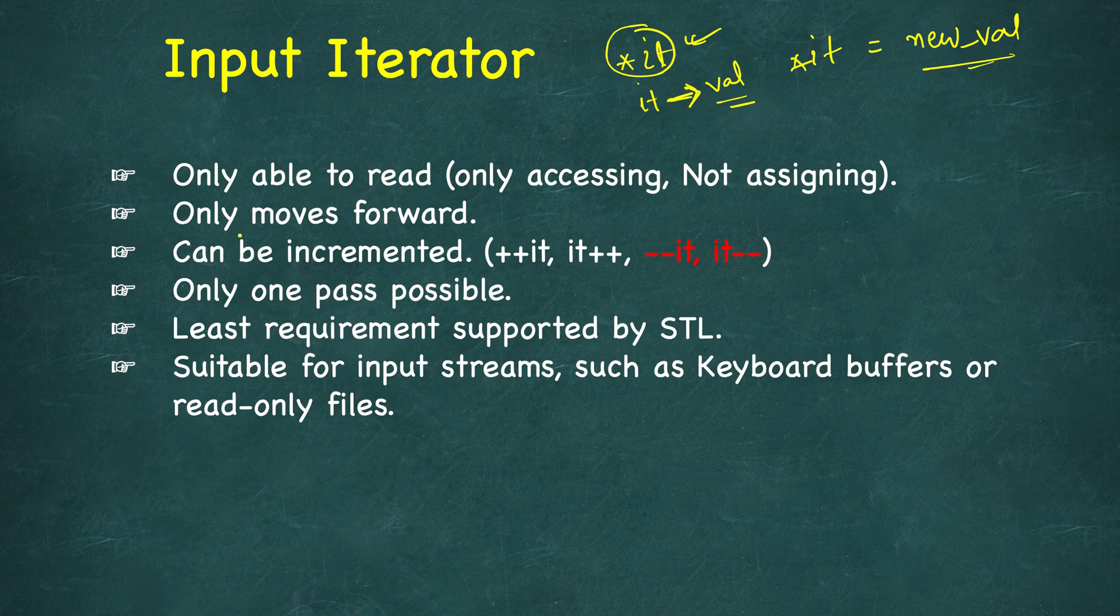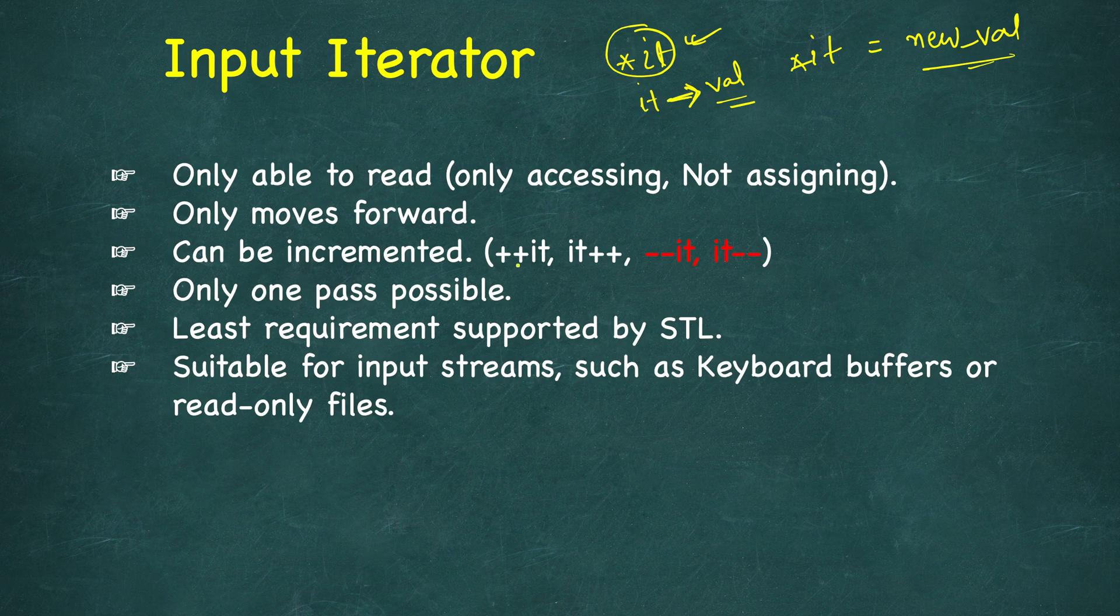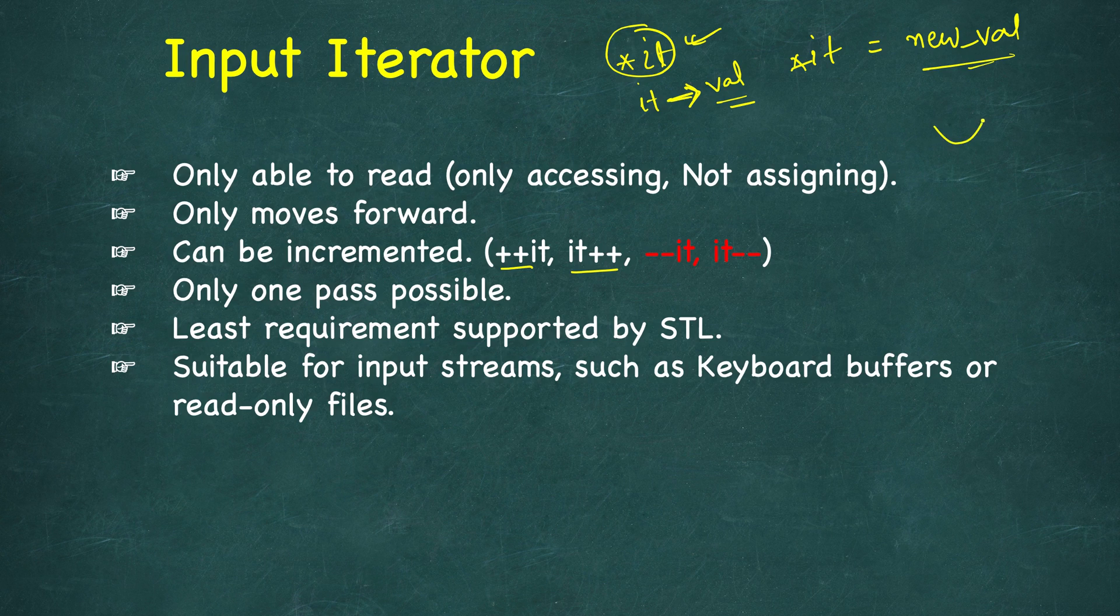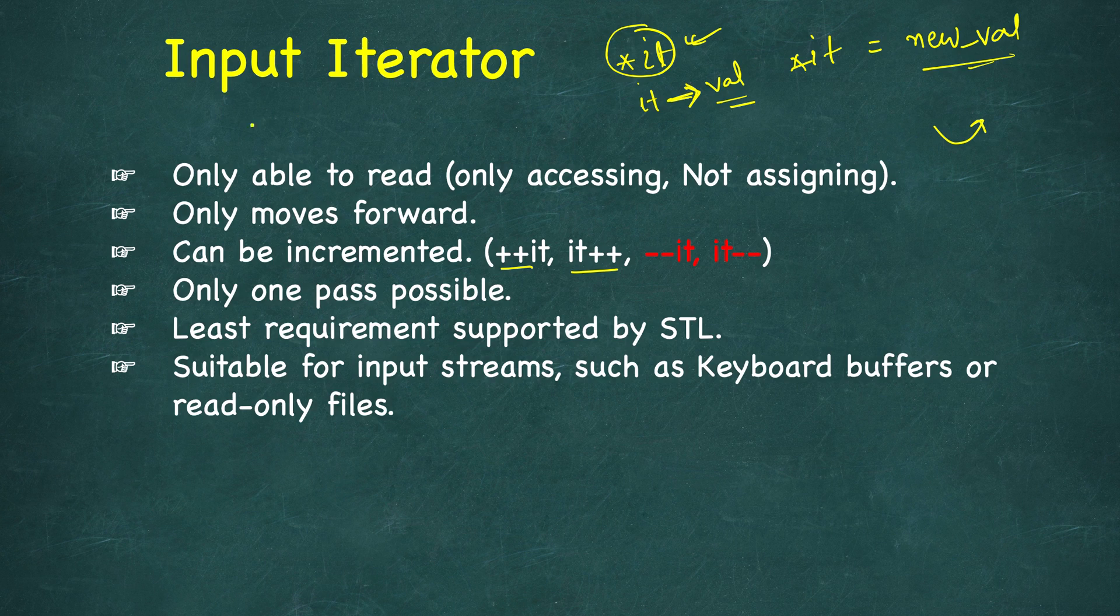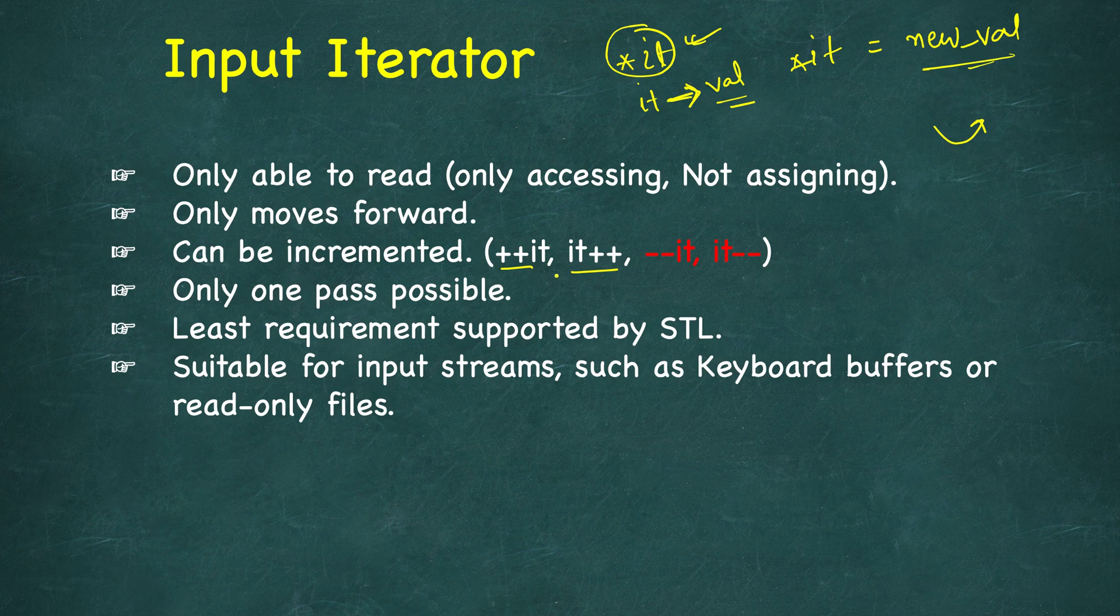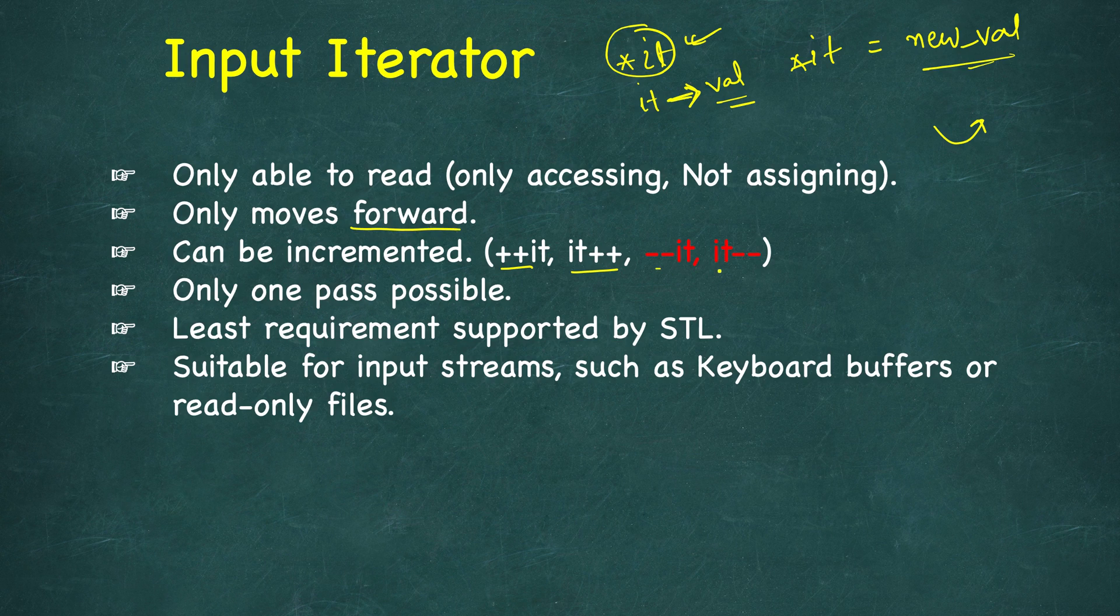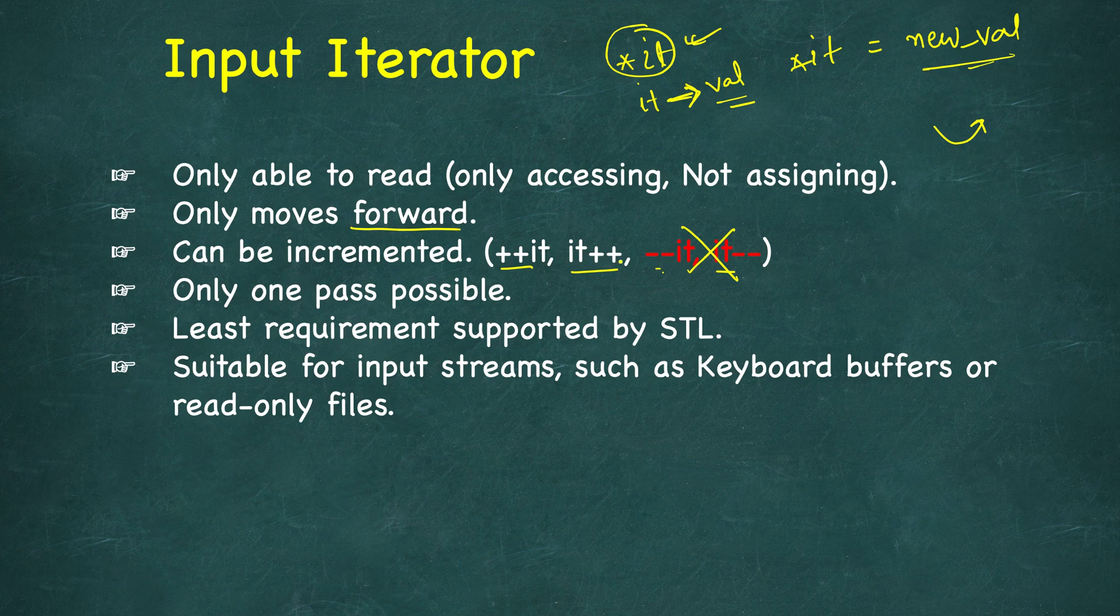Input iterators only move forward and can be incremented. You can do plus plus it or it plus plus to advance to the next position. These can be accessed sequentially only - you cannot advance by a larger amount. You cannot go back; they can only move forward. Minus minus it and it minus minus are not allowed, whereas plus plus is allowed.